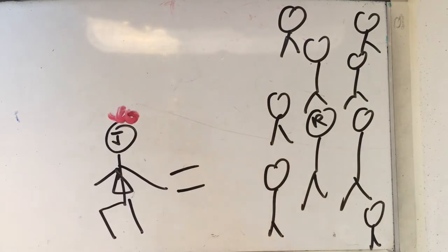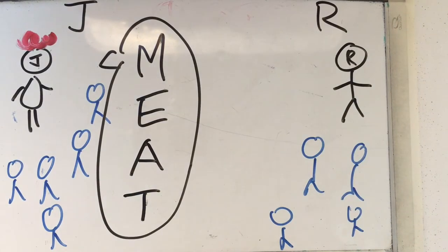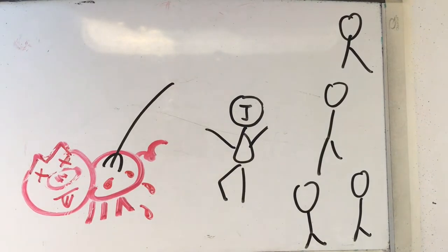Later, many of the older boys secretly join Jack's team. Jack later kills a pig with his tribe and puts the pig's head on a stick.